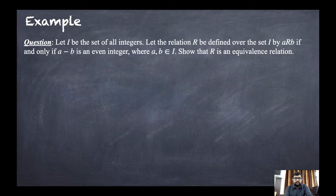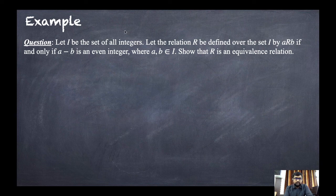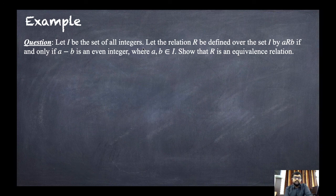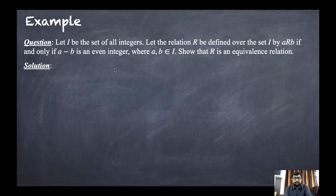Example 1: Let capital I be the set of all integers. Define the relation R over I by: a is related to b if and only if a minus b is an even integer, where a and b both belong to I. Show that R is an equivalence relation. To do so, we check all three axioms: reflexivity, symmetry, and transitivity. For reflexivity, the condition requires a minus a to be an even integer.